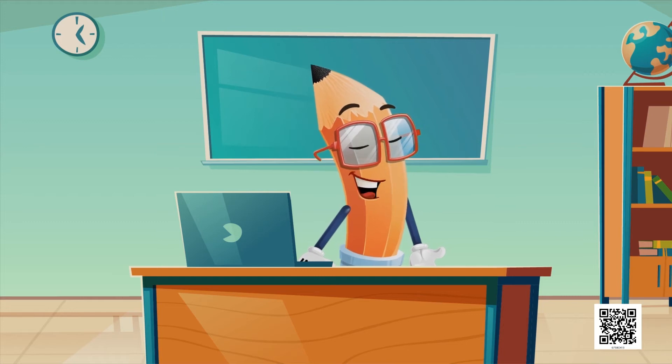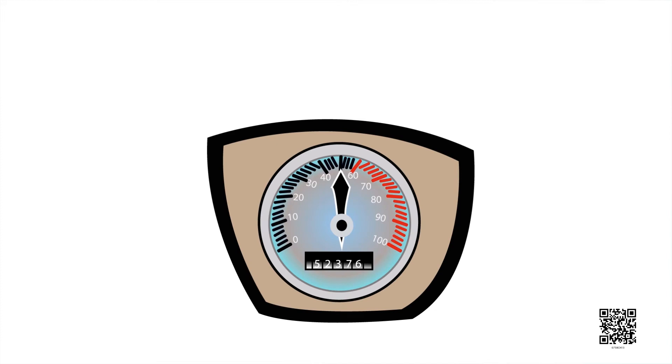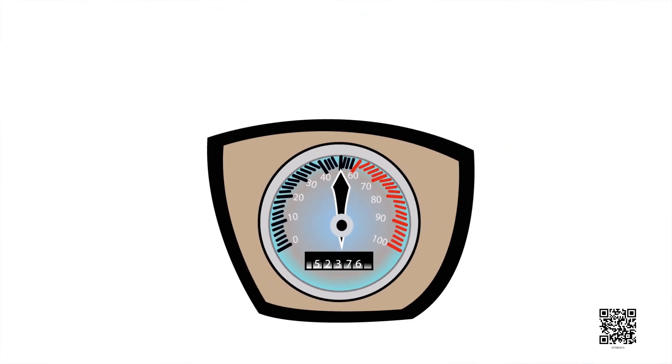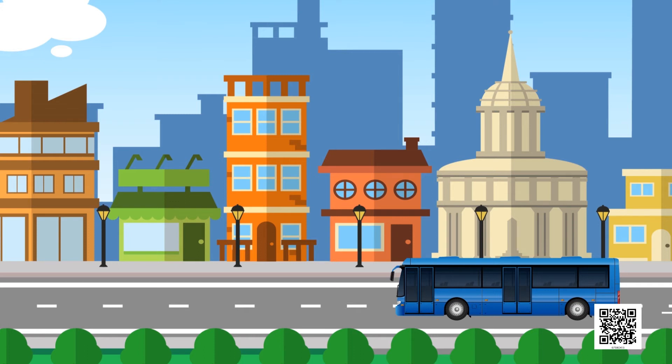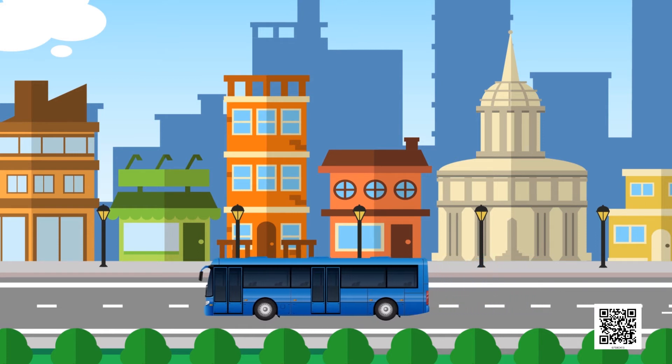You all might have seen a meter fitted on top of the scooter or a motorcycle, or on the dashboards of cars and buses. This is called a speedometer. It records speed directly in kilometers per hour.